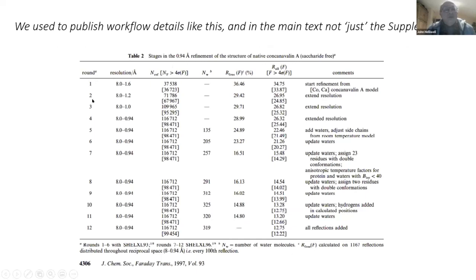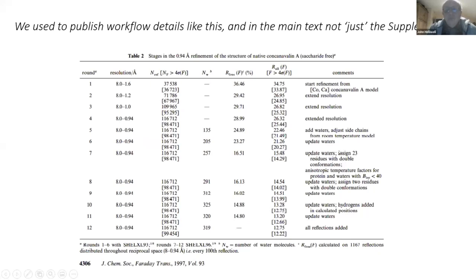We'd talk about what we do at different rounds: expanding the resolution limit, looking at the number of reflections, what's happening with our free R, the number of waters we're gradually adding, and then going anisotropic and so forth. This level of detail we wouldn't be able to get into the main text today, and perhaps it's too boring — but on the other hand, it's details which the reader will look at with comfort, feeling confident in what we're explaining in terms of our procedures.